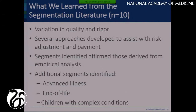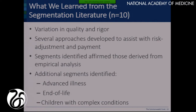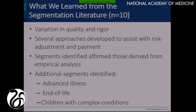What we learned from the segmentation literature: one, there isn't a lot of it; two, there's an enormous amount of variation in its quality and rigor. There are several approaches, but we also found additional segments identified when we look beyond what Jerry and Ashish were coming up with. We heard about it in the conversation: advanced illness, end of life, and children with complex conditions. I don't really expect Ashish to have found children with complex conditions since he was looking at Medicare claims — but three other groups emerged.